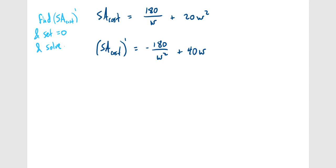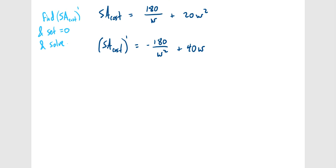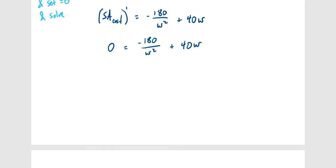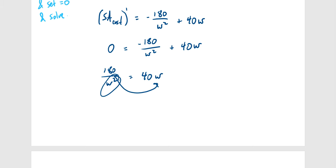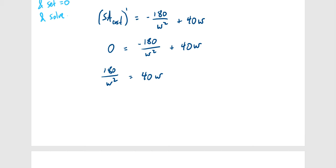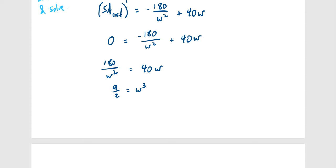Setting SA' = 0 and solving for W: add 180/W² to both sides, multiply both sides by W², and divide both sides by 40. This gives 180/40 = W³, which simplifies to W³ = 9/2. Taking the cube root of both sides: W = ∛(9/2).